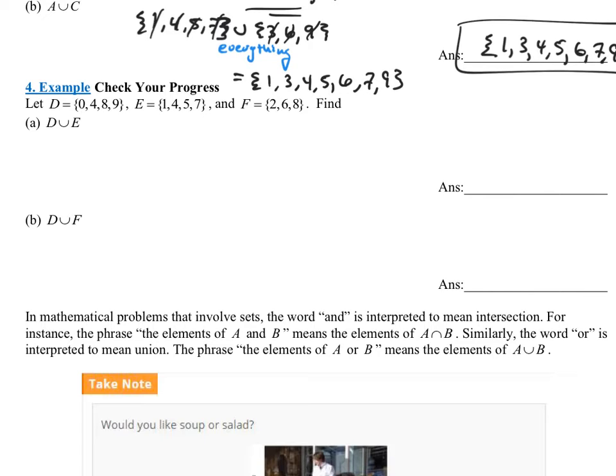Find D union E. Start by writing the sets. D is the set 0, 4, 8, and 9. Union E, which was the set 1, 4, 5, 7. And again, remember that union means we're taking it all. We're taking everything together. Your baggage, my baggage, all of it for the union.